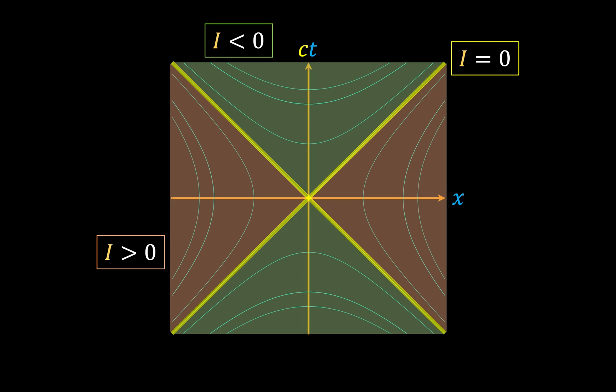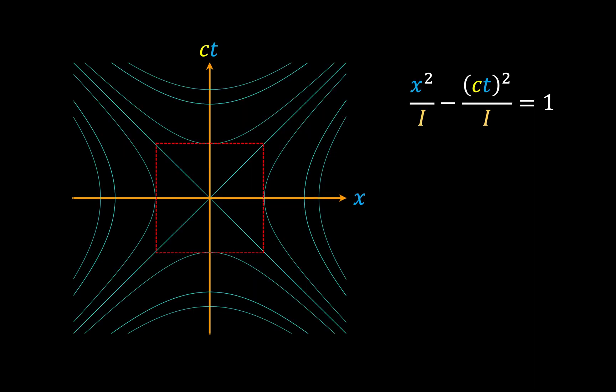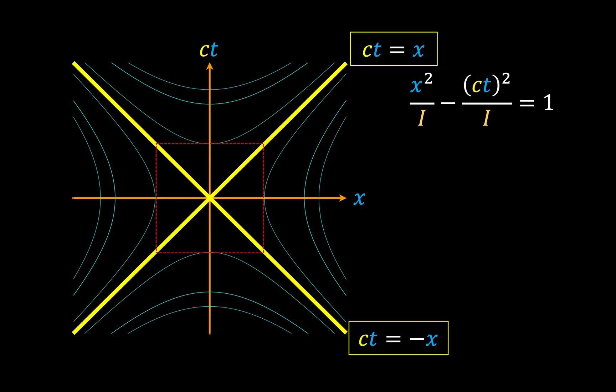Now, as it turns out, the sign of the spacetime interval between two events has some physical significance as well. Now, in a Minkowski diagram, the rectangle associated with the hyperbola has equal width and height, so the asymptotes follow the equations ct equals x and ct equals minus x, respectively. Now, since these lines effectively trace the path of a beam of light emitted from the origin, they essentially delineate the boundaries of the past and future light cones.